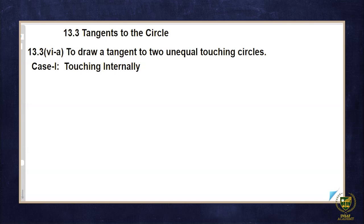The case we want to understand today is 6a. So first let's understand what we are being asked here: to draw a tangent to two unequal touching circles. This means we have to draw a tangent on two circles which are unequal, but along with unequal, one more thing is mentioned — touching circles. It means the circles on which we want to draw the tangent will appear to be touching each other.